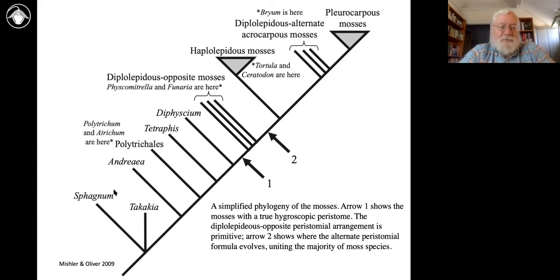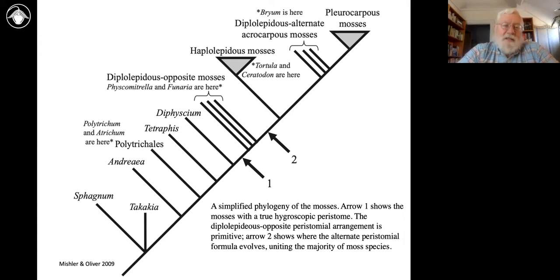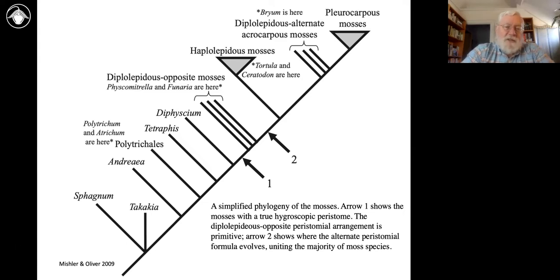Takakia is a bizarre little plant with special status. It's not in the continental U.S. — it's in the western hyper-maritime areas of Canada and Alaska, and then over to Russia and Japan. It's hyper-oceanic, found right close to the ocean, like the Queen Charlotte Islands and the Aleutian Islands. It's another early-diverging branch — either sister to Sphagnum or more likely sister to the lineage shown as unresolved here, or it may even be the sister group to all mosses.